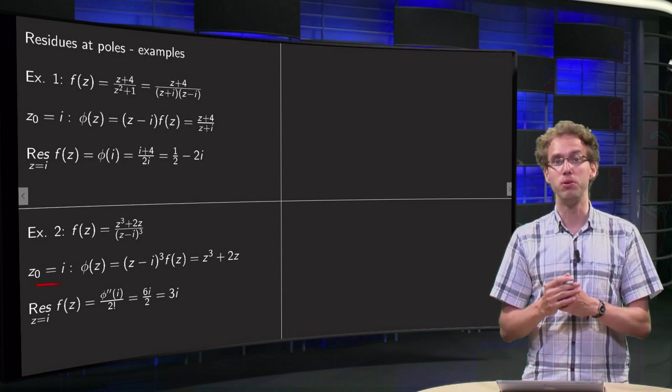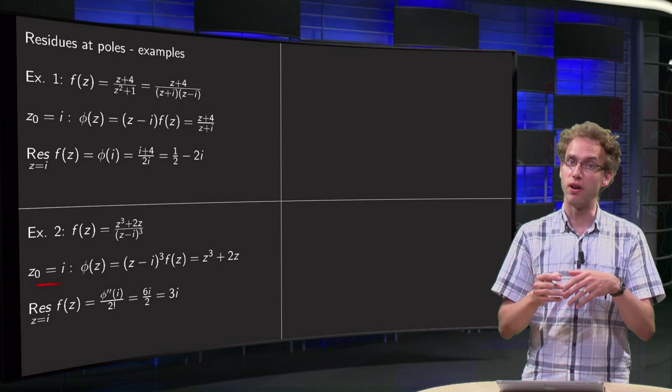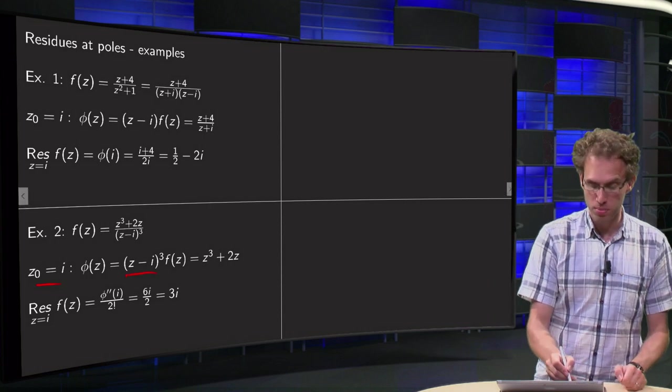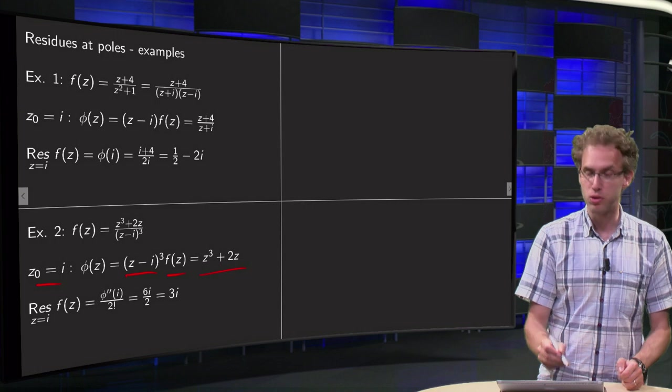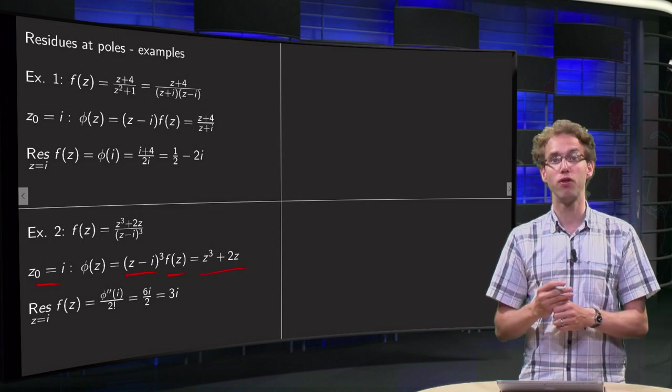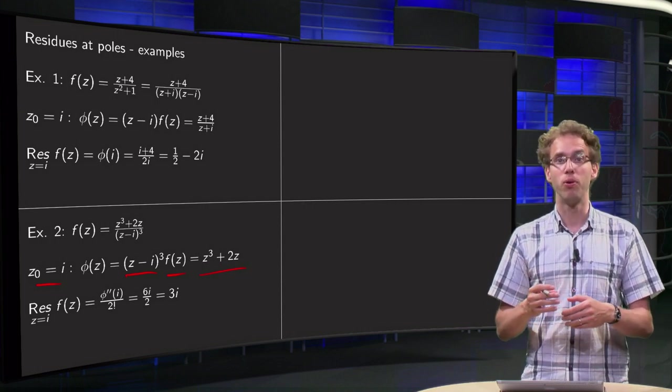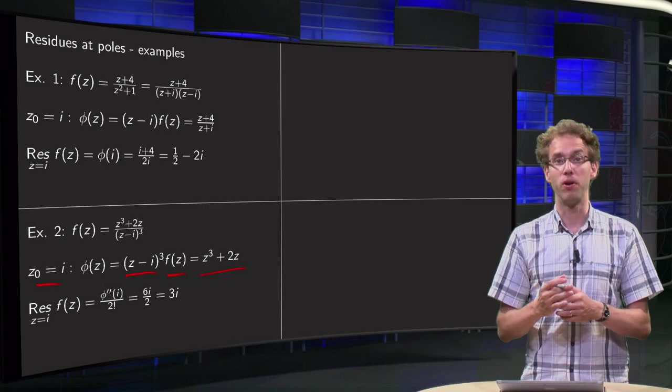We compute our phi of z first. phi of z equals z minus i cubed times f of z. It becomes very easy now, z cube plus 2z. And then we can use our formula for a third order pole at z zero.